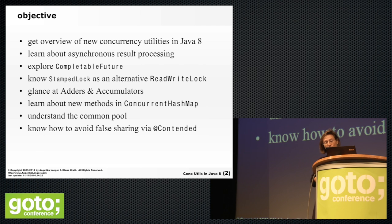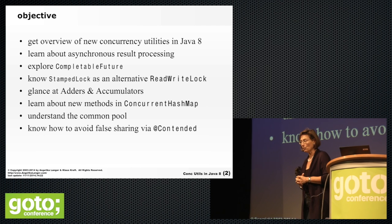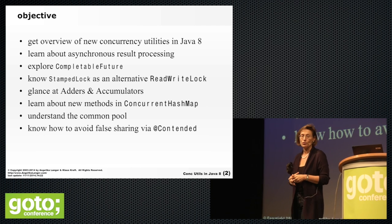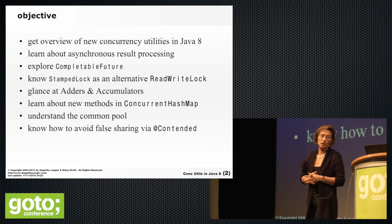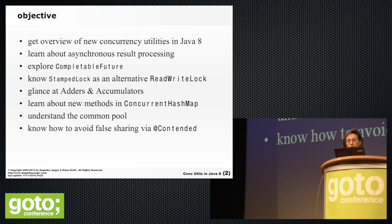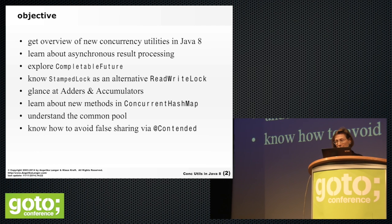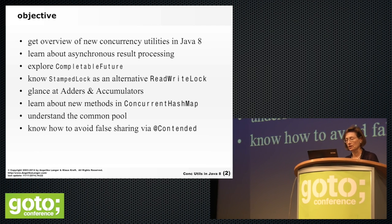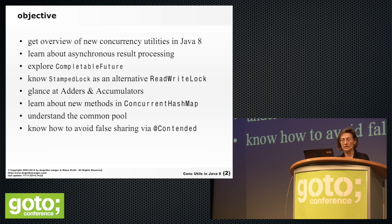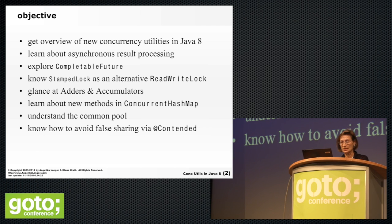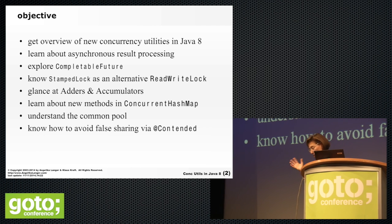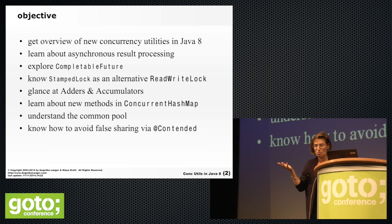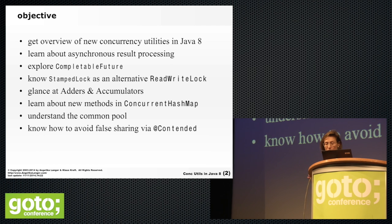Another abstraction added in Java 8 is StampedLock, which is an alternative lock — in particular, an alternative to the read-write lock available since Java 5. There is also another addition: adders and accumulators, which are similar to AtomicLong and atomics in general.